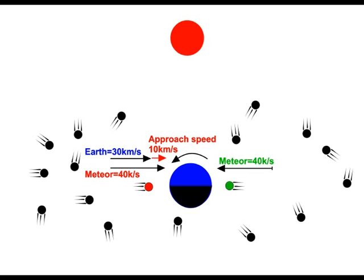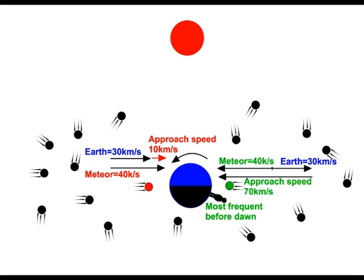However, those traveling in the opposite direction to the earth will hit the atmosphere at 70 kilometers per second, and therefore more will be visible just before dawn.